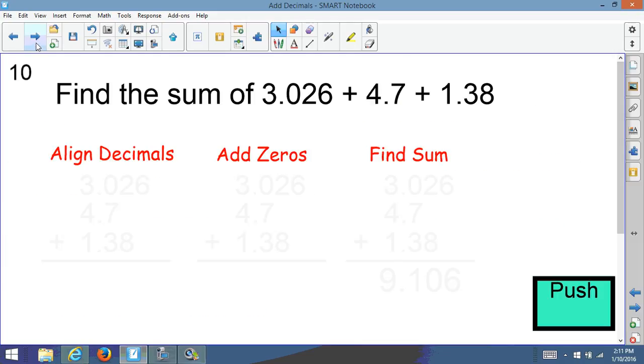So here's one. Find the sum of 3.026 plus 4.7 plus 1.38. Okay, so what we have to do, we have to line up the decimals, so we're going to line them up in straight lines.